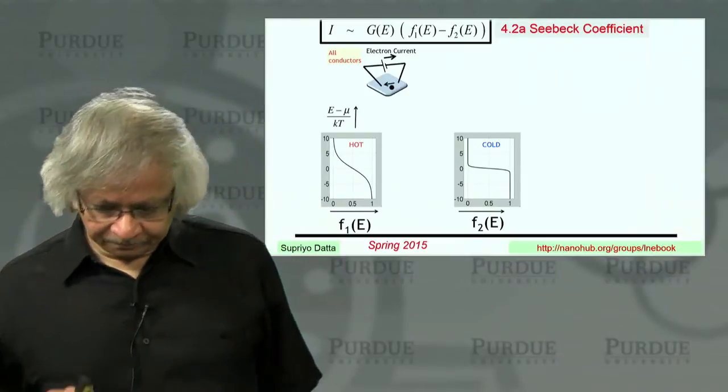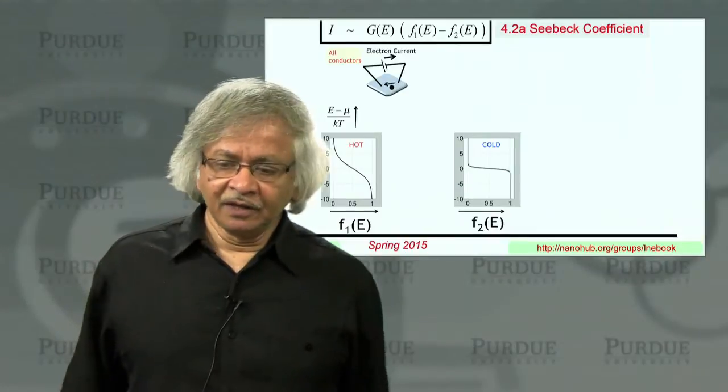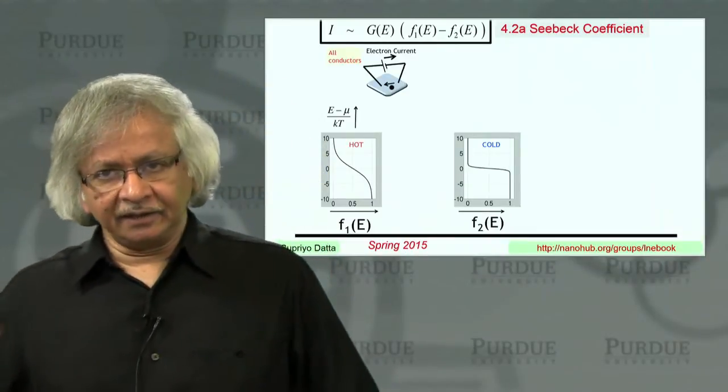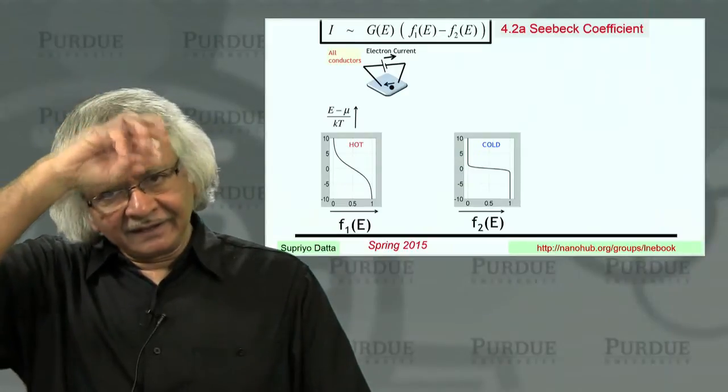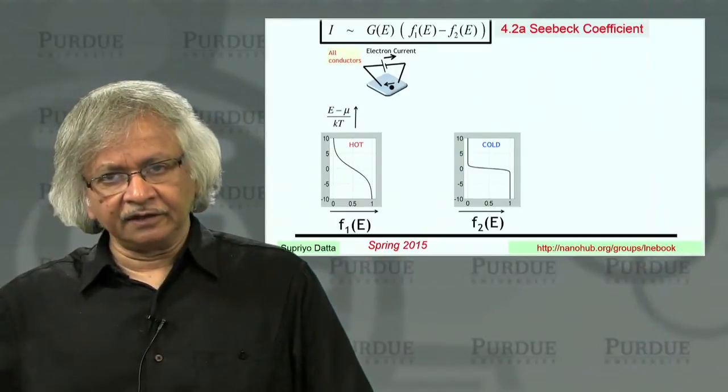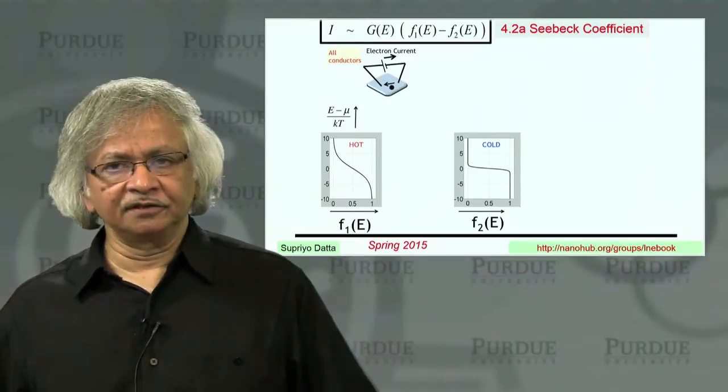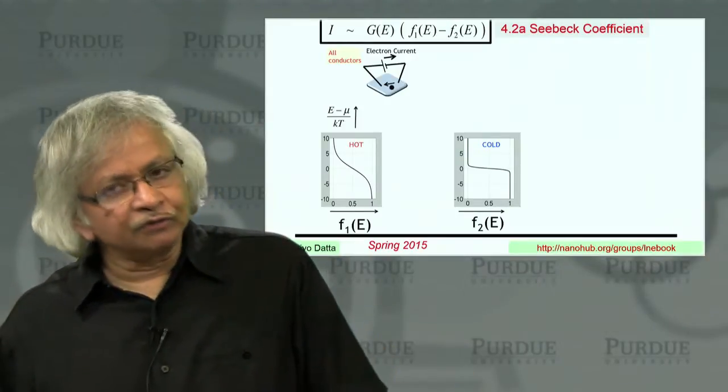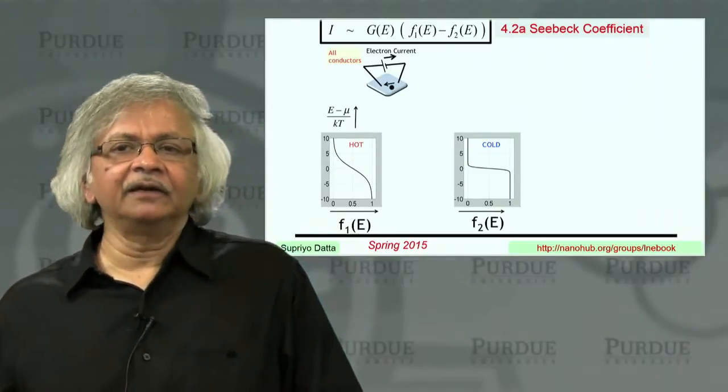But there's a difference though with the current flow that you get with a voltage. With a voltage, electrons always flow from the negative end to the positive end. On the other hand, when you apply a temperature difference, the electrons could flow from hot to cold or from cold to hot depending on the material.